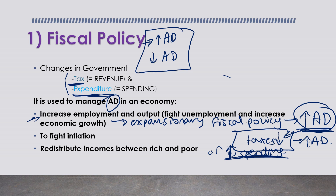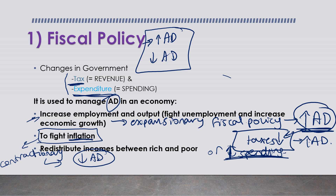If the government wants to fight inflation, they would use something called a contractionary fiscal policy, and at that point they want to decrease aggregate demand. When we have inflation, overall prices are higher. To decrease prices, the government decreases aggregate demand. To achieve that, the government should increase taxes so people have less disposable income and demand less - when demand falls, prices decrease. Or the government can decrease spending.